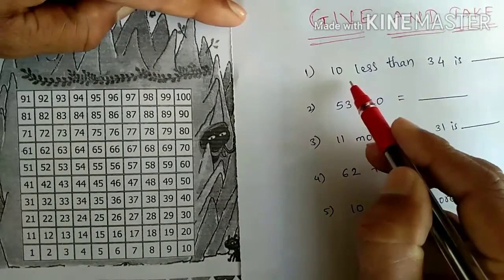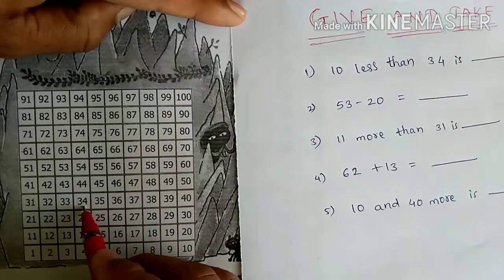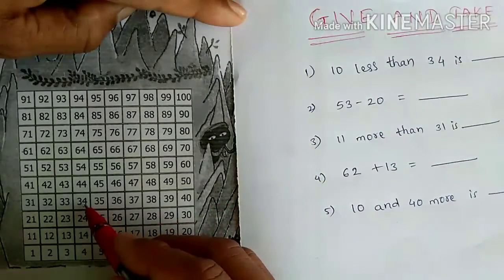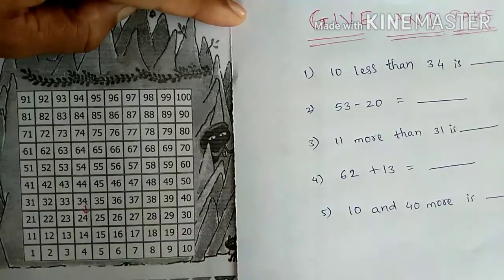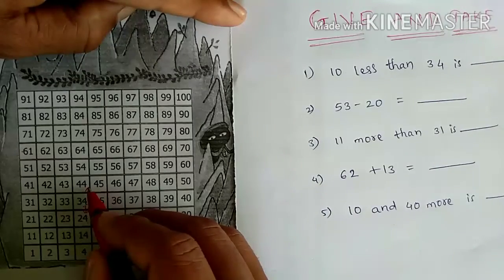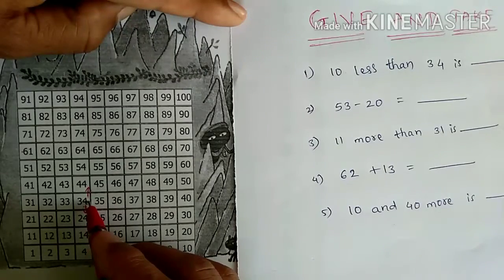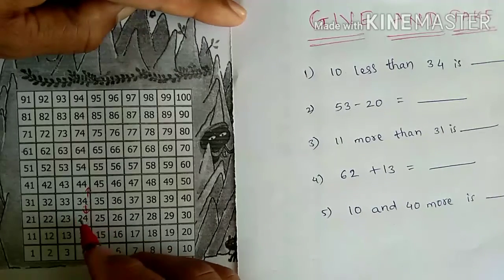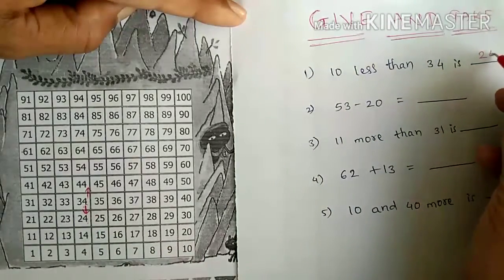Let us start with the first example: 10 less than 34. We can see where 34 is — it is here. So 10 less than 34 means 34 minus 10. Less means we have to come back — we jump from one row to another in the table. Jumping backward subtracts 10, while jumping forward adds 10. So 10 less than 34 means we move one row down, and the answer becomes 24.